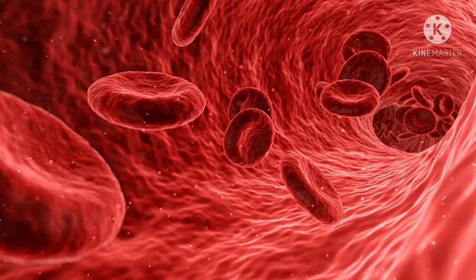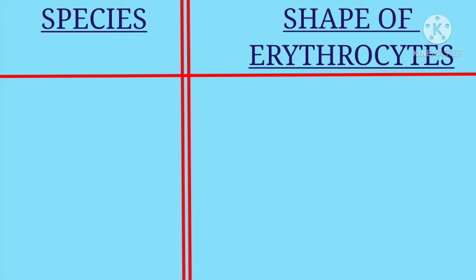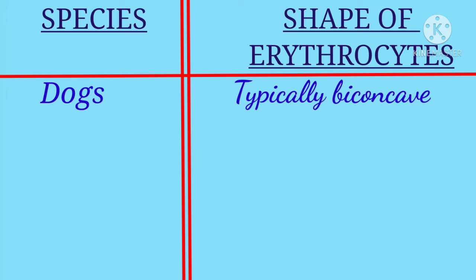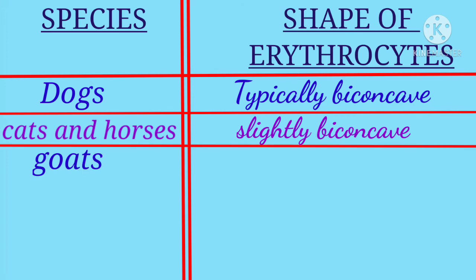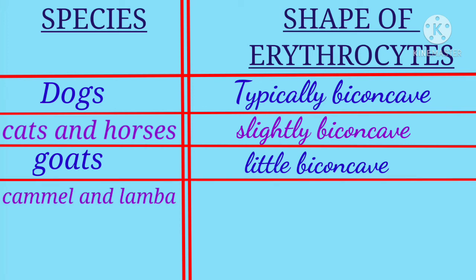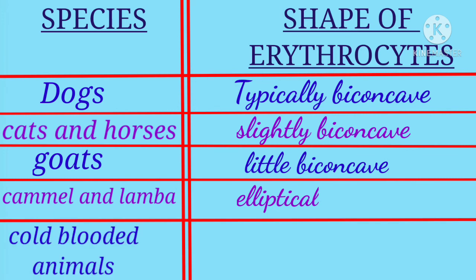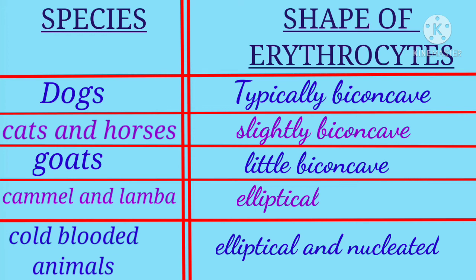Though the erythrocytes is biconcave, its concavity also varies as per the species. In dogs, it is typically biconcave. In cats and horse, it is slightly biconcave. In case of goats, it is little bit biconcave or somewhat spherical in shape. In camels and llamas, it is elliptical in shape. And in cold-blooded animals, it is elliptical and nucleated.